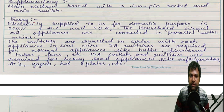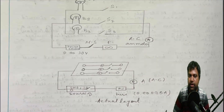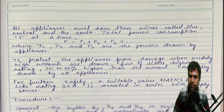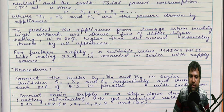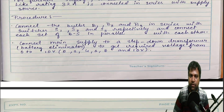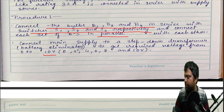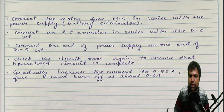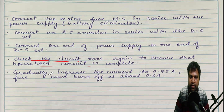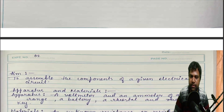You can write the theory or just write the procedure directly — no issue. Write the concept and procedure, what materials are used, and draw the diagram of how you connected the three bulbs. Then write the procedure: connect bulbs B1, B2, B3 in series with switches S1, S2 respectively and connect each set in parallel with each other. Connect a 10 or 12 volt battery, use the fuse, check the circuit, ensure it is complete and glowing.